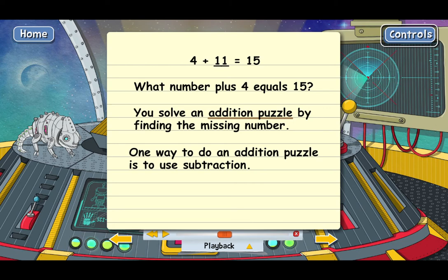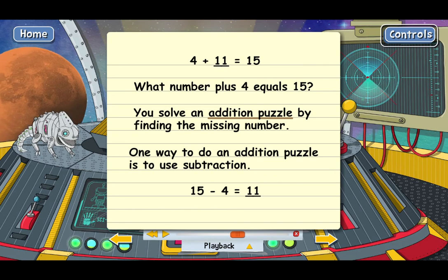If you've got 4 plus some number equals 15, the missing number has to equal 15 minus 4. And then you can just subtract 15 minus 4 and get 11, which is the answer. That's the way it works.